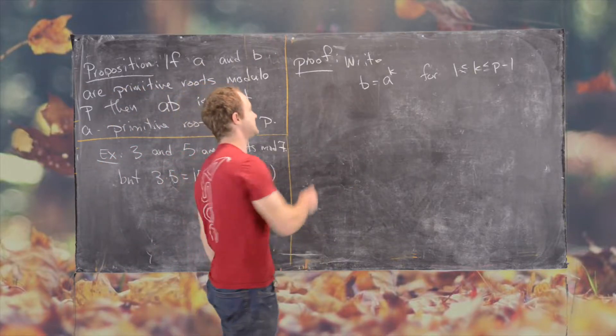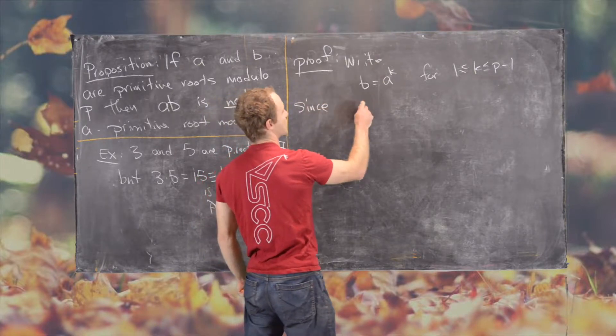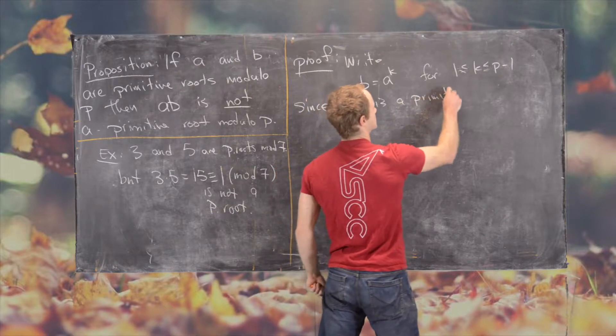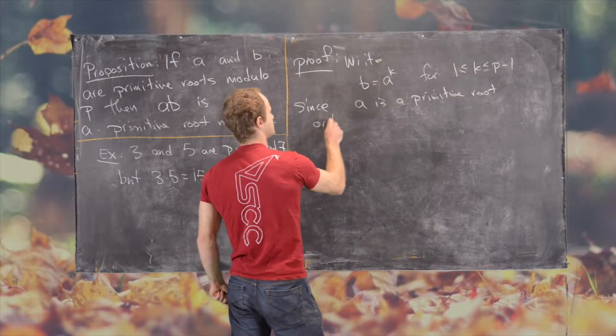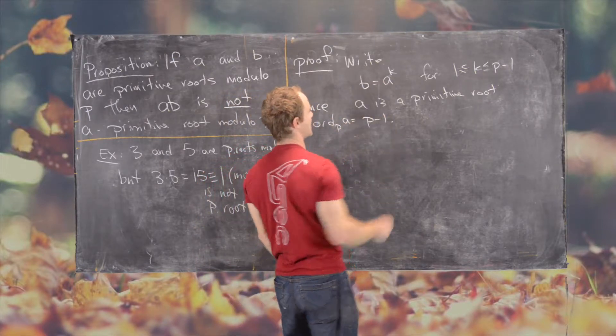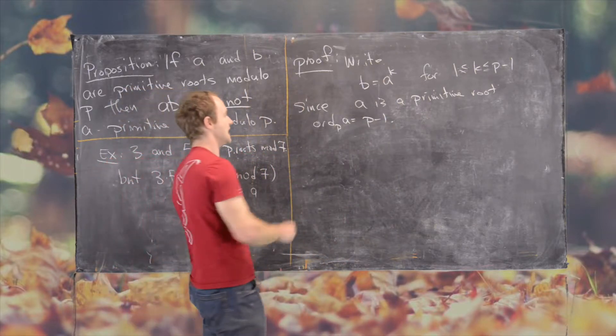So now there are two things that we know. Since A is a primitive root, we know the order modulo P of A must be P minus 1. So that's one of the defining factors of a primitive root.